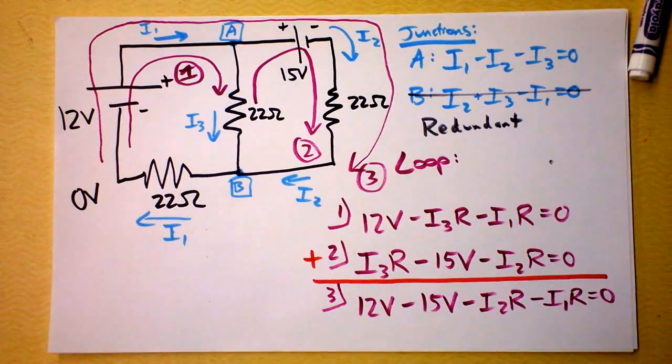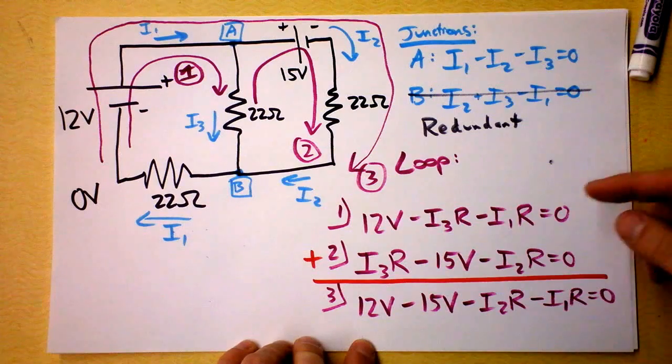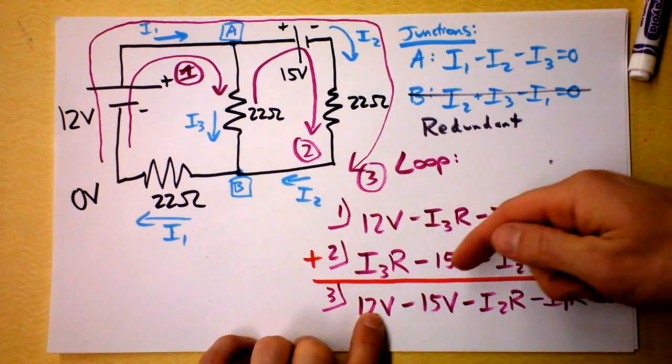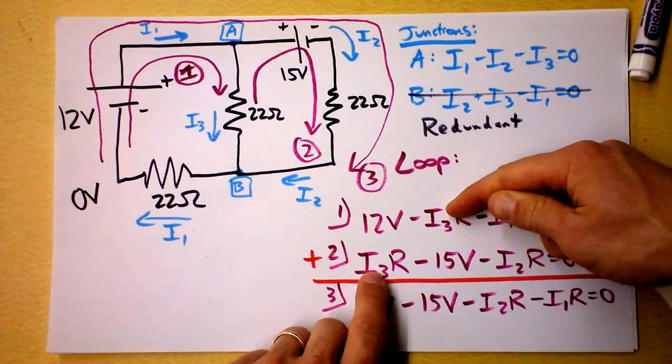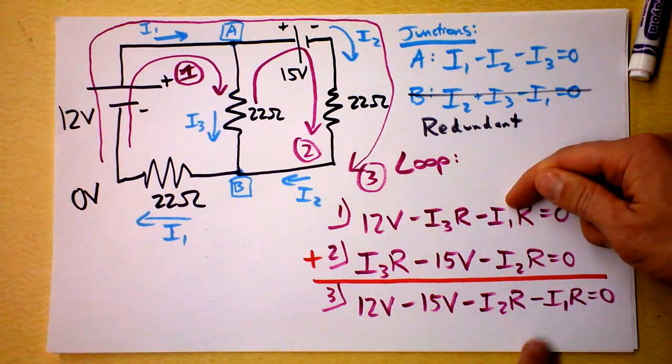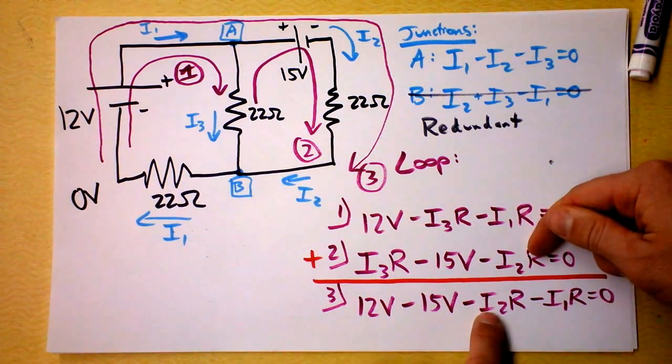So again, we have a redundant equation. This one plus this one. Check it out. We've got a 12 volts. We've got a negative 15 volts. We've got an I3R minus and an I3R plus. So those guys don't appear. And then I'm subtracting I1R, boom, right there. And I2R right there.